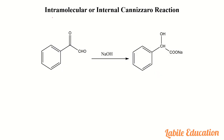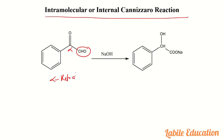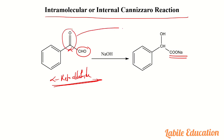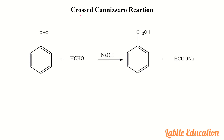Another example of intramolecular Cannizzaro reaction involves an alpha-keto aldehyde, where one group is an aldehyde and the other is a ketone, with no alpha hydrogen. The aldehyde group (terminal) is oxidized into the carboxylic acid or its sodium salt, and the ketonic group is reduced to an alcohol. Since it is a ketone, we get a secondary alcohol as the product.